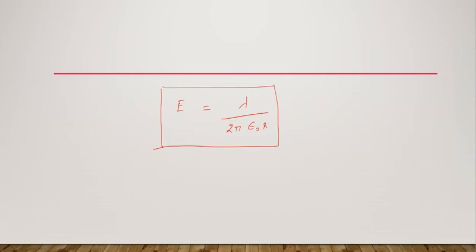This is the electric field intensity due to a linear charge or uniformly charged distribution along a line. The electric field intensity is inversely proportional to r, and the direction is radially outward if the charges are positive. If the charges are negative, the direction will be radially inward. I hope you have understood — if there is any doubt, please share in the comment section. Thank you.